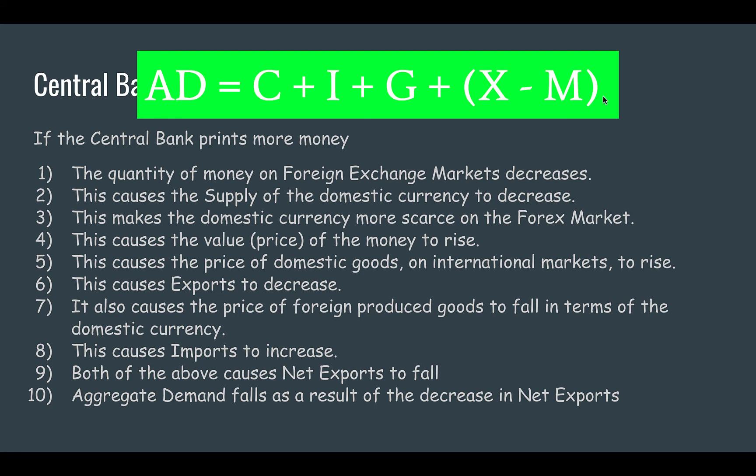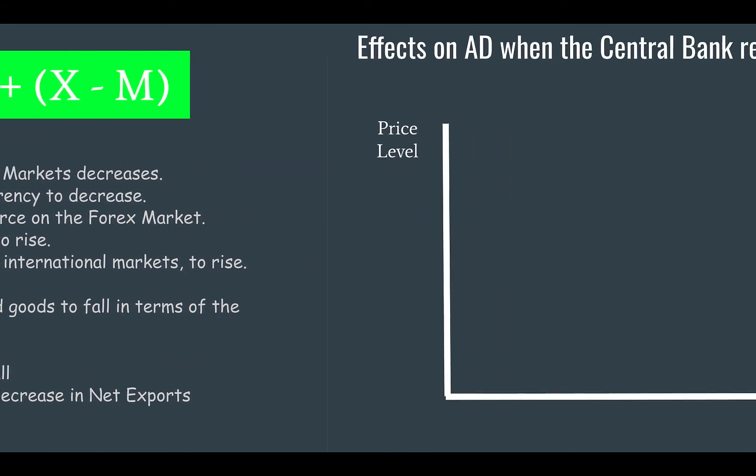All of this is a result of a reduction in the money supply. Now, these are short-term things — don't forget prices adjust in the long run. But these are short-term effects over, say, one to five years that will cause aggregate demand to fall.